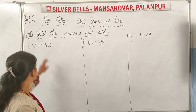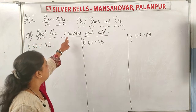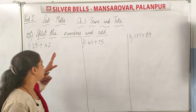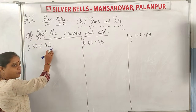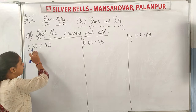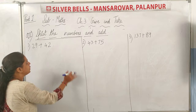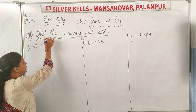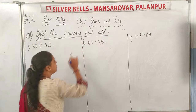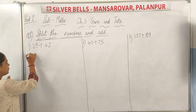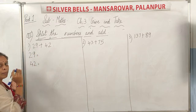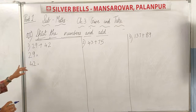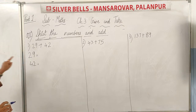Now the next question is Question 2: Split the numbers and add. You have to break the question. Split the numbers — the given numbers are 29 plus 42. We will not add them directly; first we have to split them. Split means you break the number.